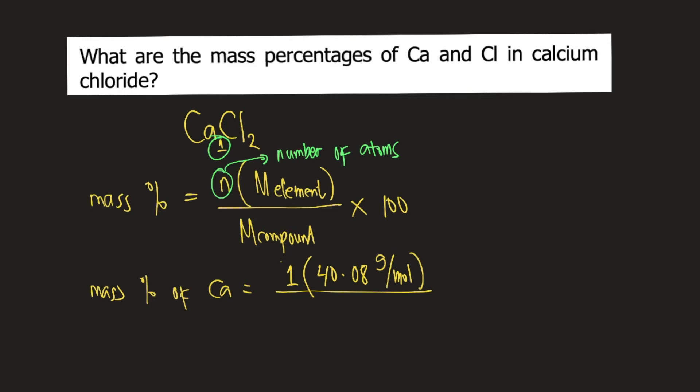The molar mass of CaCl2 is 110.98 grams per mole times 100. Grams per mole will cancel. So you have 1 times 40.08 divided by 110.98 times 100.